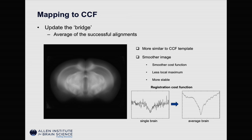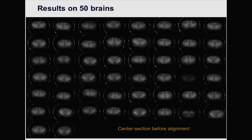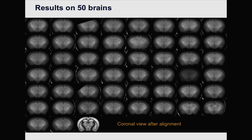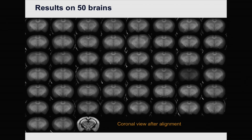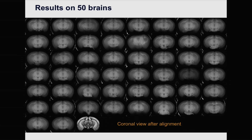So we did something to improve: we upgraded our bridge from a single brain to the average brain of the 24 brains we just aligned. We did this because this brain is much more symmetric and more similar to the CCF template, which is also an average brain. And more importantly, this brain is much smoother, so you get a much smoother cost function. When you do the optimization on that function, you have much less opportunity to be trapped into any local minimum. Finally, we tested this whole pipeline on 50 brains — all the brains we have now for the pilot study — and this time we aligned all of them.